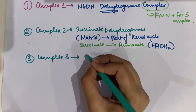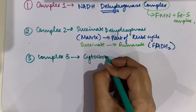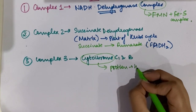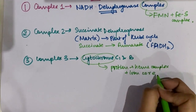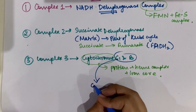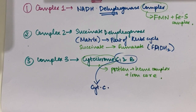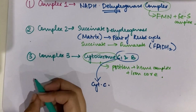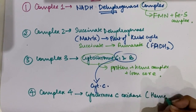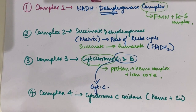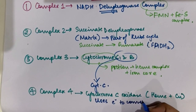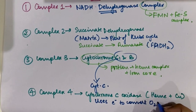Complex 3 is composed of cytochrome b and cytochrome c1. Cytochromes are proteins with heme complexes and an iron core. Cytochrome b and cytochrome c1 together accept electrons from the electron transport chain and pass them on to cytochrome c. Complex 4 is cytochrome c oxidase, which also contains heme and copper, and its speciality is that it uses the electrons donated to it to convert oxygen into water.